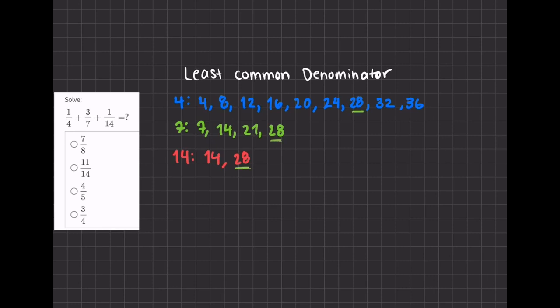Now to get from 4 to 28 we multiplied by 7. To get from 7 to 28 we multiplied by 4, and to get from 14 to 28 we multiplied by 2.